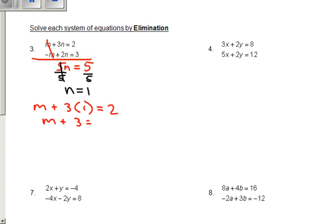M plus 3 equals 2. Here, we're going to go ahead and subtract 3 to both sides. Those cancel. You're going to get M equals negative 1. Whenever you're solving a system, you want to make sure that you write your final answer as a coordinate point. In this case, M becomes before N, so it'll be negative 1, comma 1. That's going to be your solution to that one.